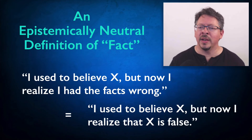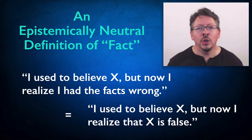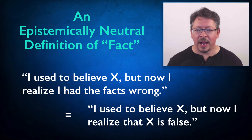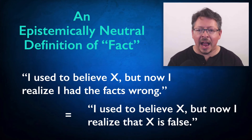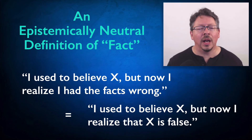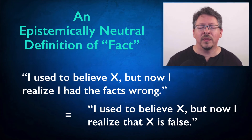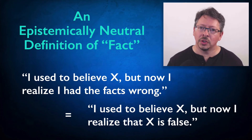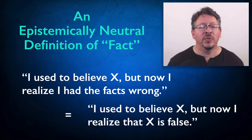So let's look at how this reading helps with our examples. I used to believe X, but now I realize I had the facts wrong. On the neutral reading of 'facts,' where a fact just means a true claim, to say that I had the facts wrong is just to say that I now realize the claim is false. I used to believe that dolphins are fish; now I realize that dolphins are not fish. My belief was false. It makes perfect sense.